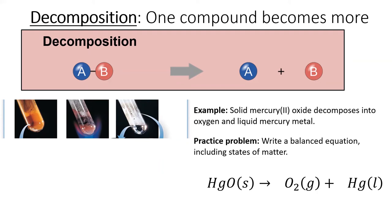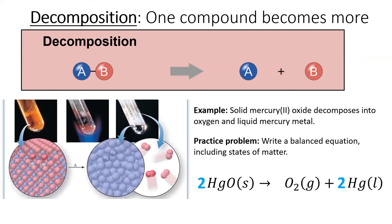Mercury 2, the ion, has a 2 plus charge, so it only needs one oxide ion in order to neutralize that charge. In order to balance this, I first add a 2 in front of mercury oxide, and then I add a 2 in front of mercury.